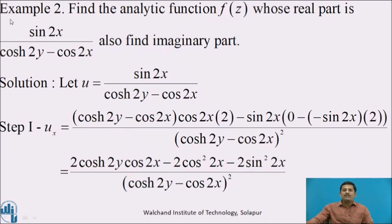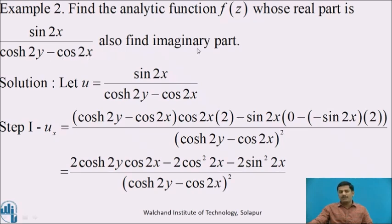Let us consider one more example. Find the analytic function f(z) whose real part is sin 2x / (cosh 2y - cos 2x). Also find the imaginary part. Solution: as it is the real part, we denote it by u. Step 1: let us differentiate u partially with respect to x. Here u is a rational function where both the numerator and denominator contain x.